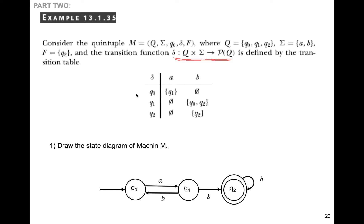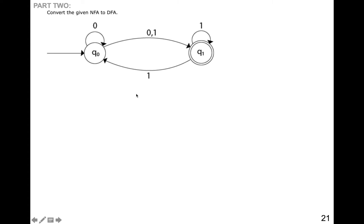As we saw, DFA is almost the same as NFA or NDFA, but the only difference is in the transition function, where a state can go to more than one state or can go to a null state. Now we can convert an NFA to a DFA. Let's see this example: if we have this NFA or NDFA — a non-deterministic finite automata — with two states, two alphabet symbols, and the given transitions.